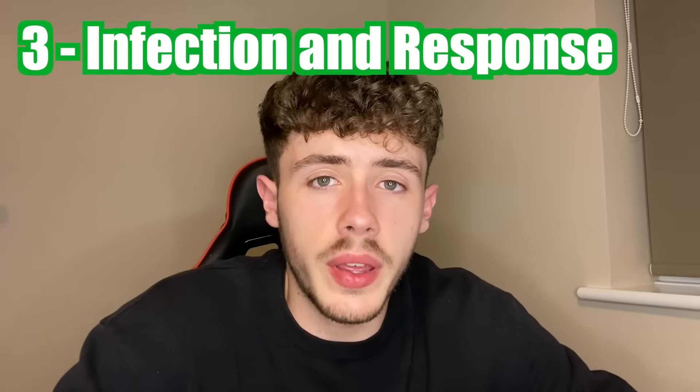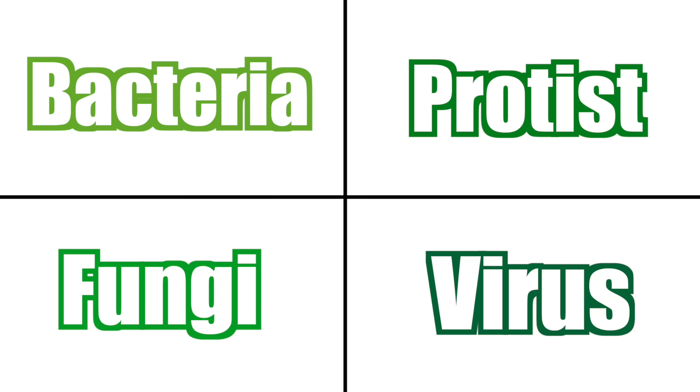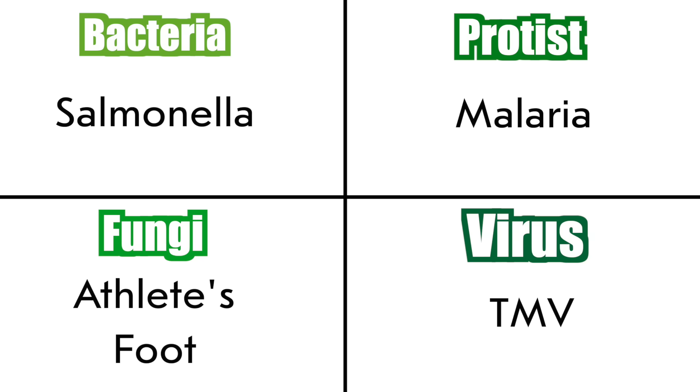Our third topic is infection and response. A communicable disease is a disease that can be spread between people. There are four main pathogen types: bacteria, protists, fungi and viruses. These different pathogens can be spread through air, direct contact or water mainly. It is always useful to know an example of each of these pathogens to talk about in your exams.